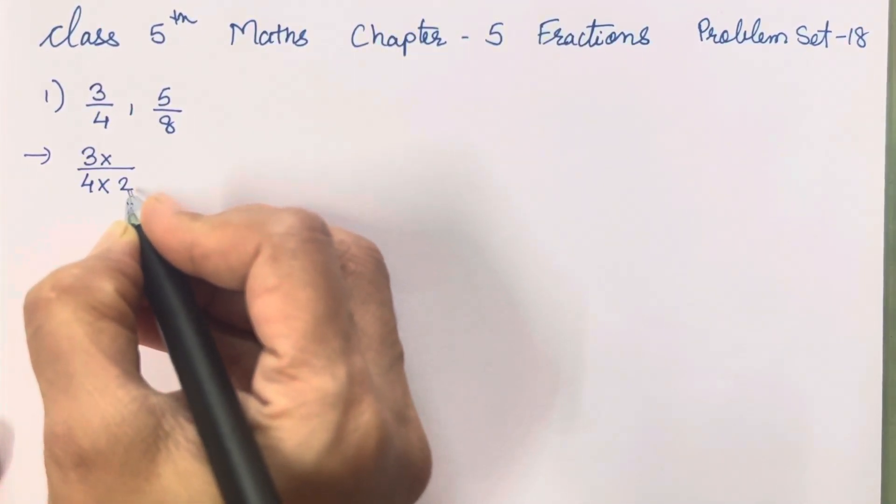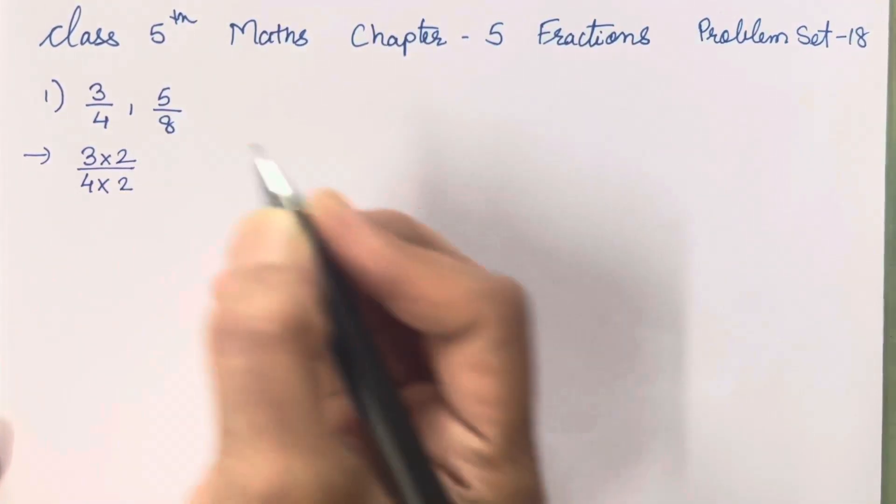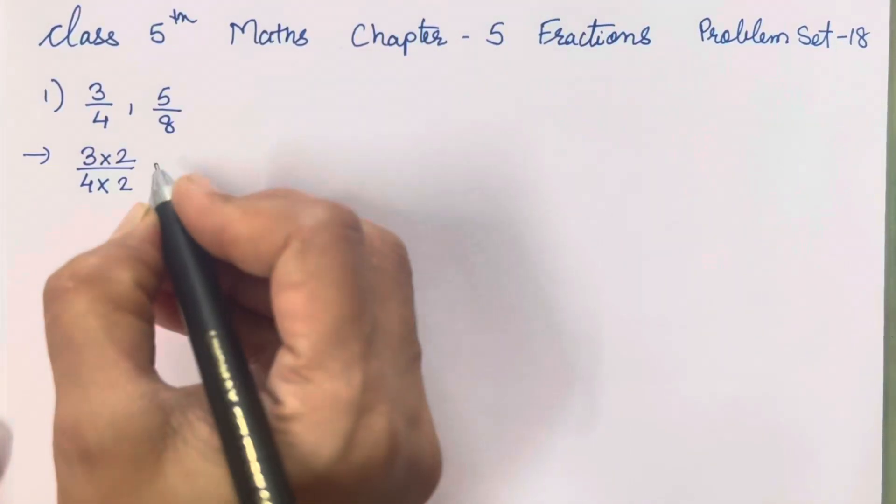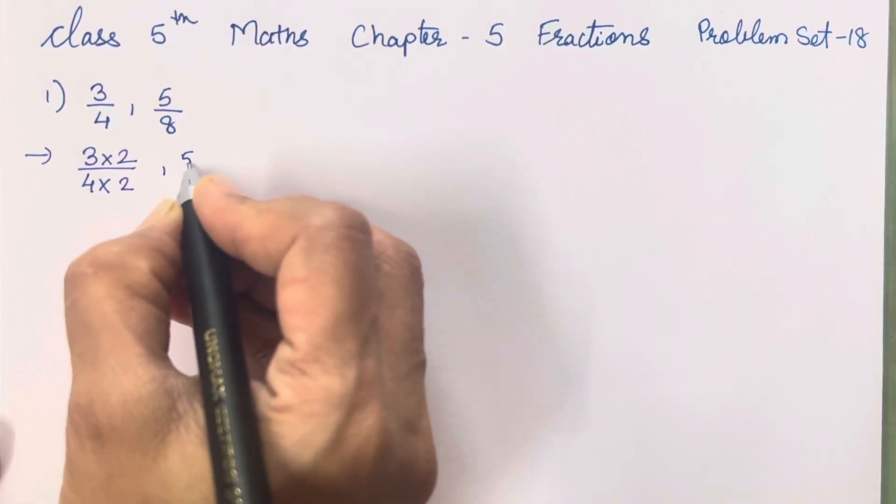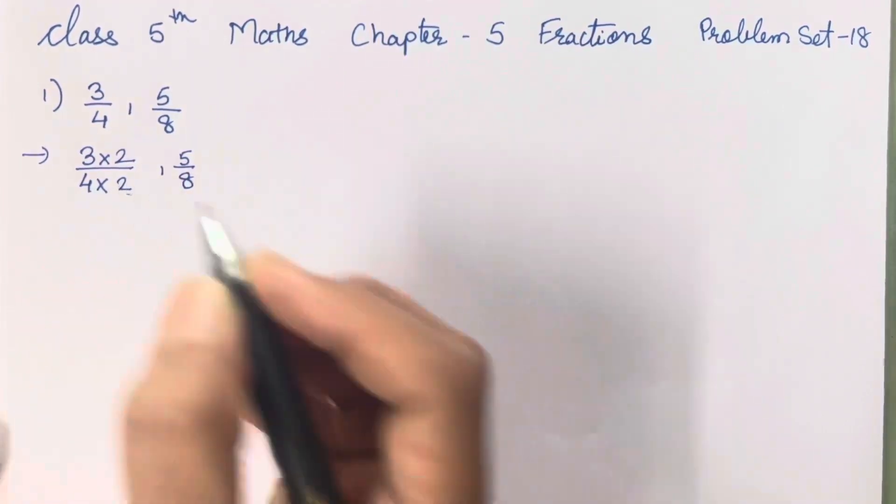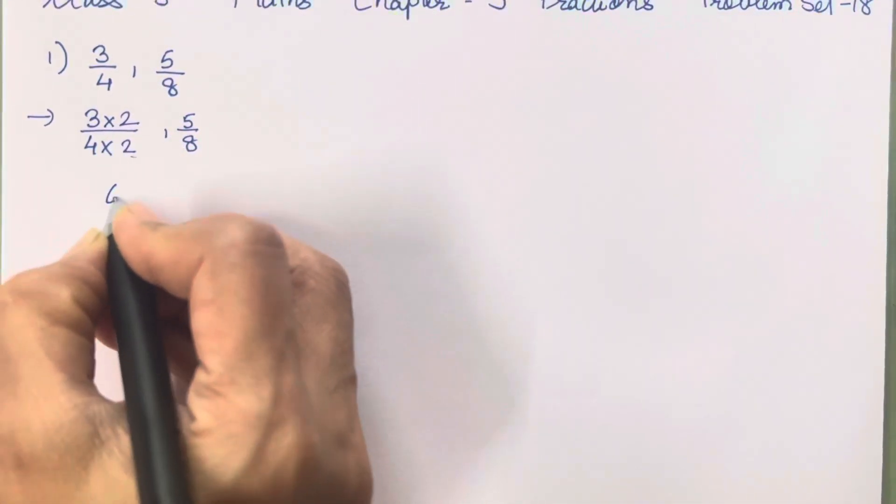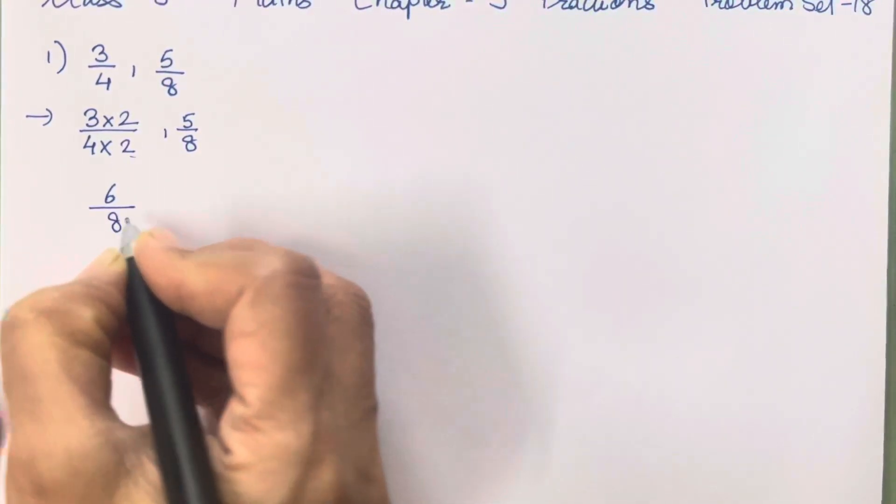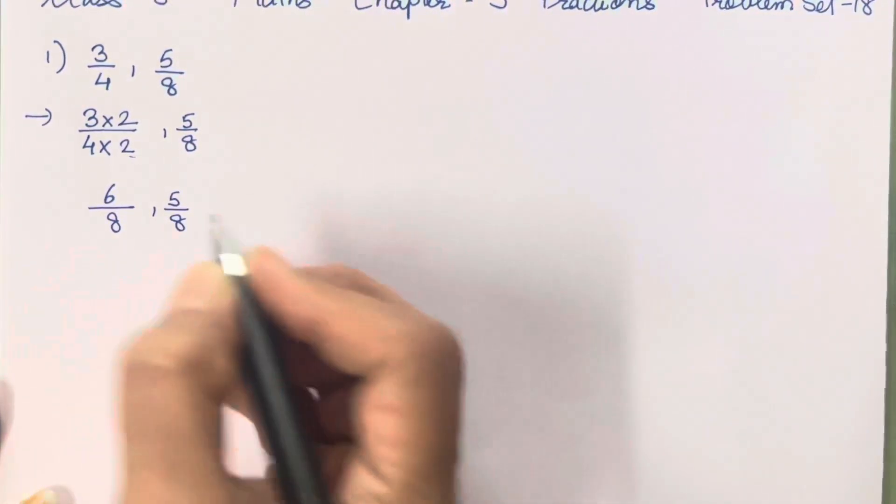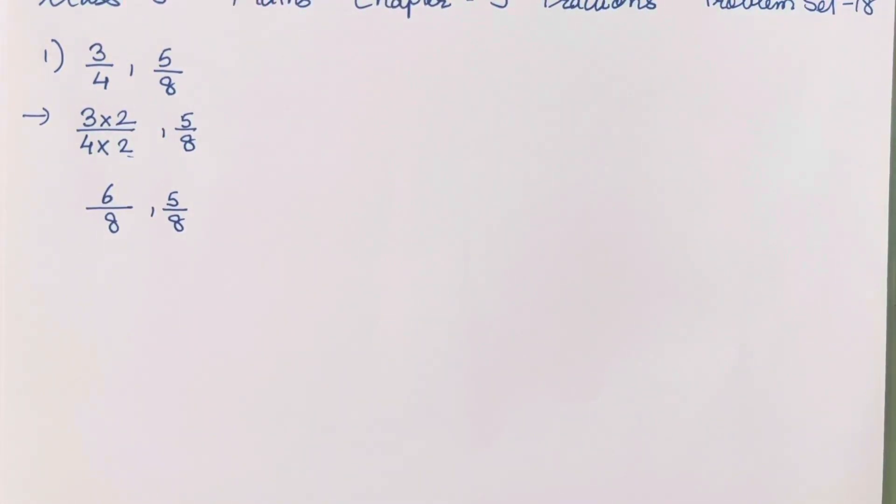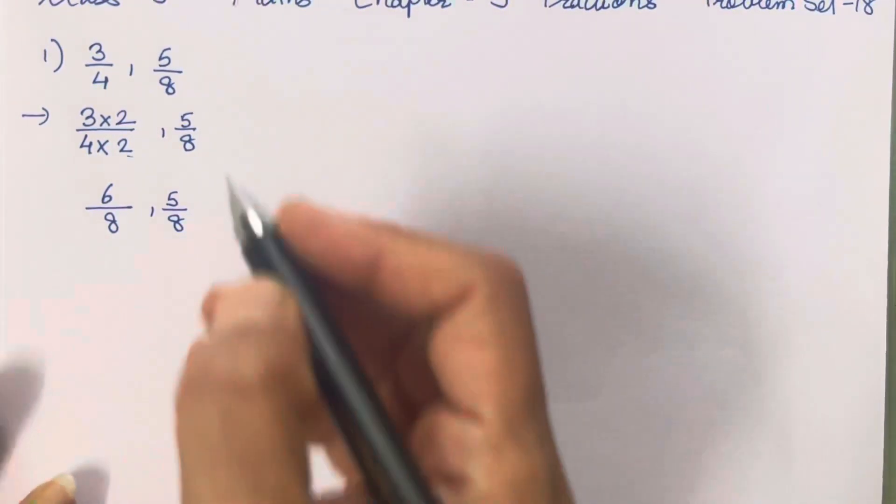So whenever we are multiplying any number to the denominator, same number we will multiply to the above number. This side we will keep it as it is because we are going to get the equal denominator. So 3 2s are 6, 4 2s are 8, and 5 upon 8. So both the denominators are same. These examples are said to be like fractions. This is what you all have to solve.